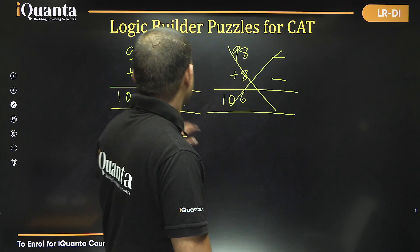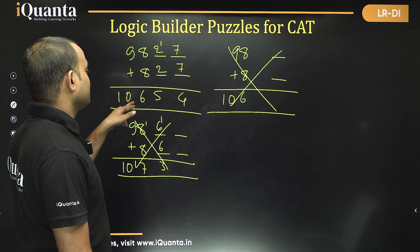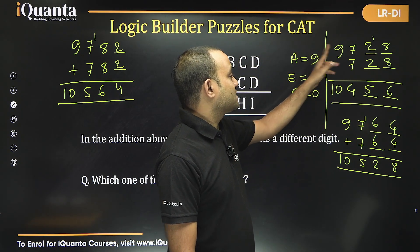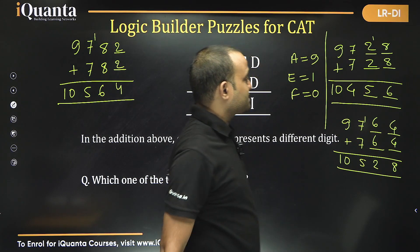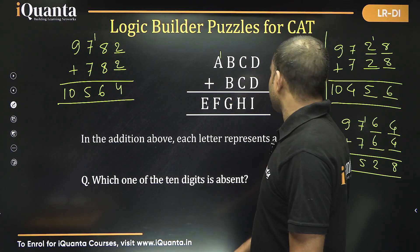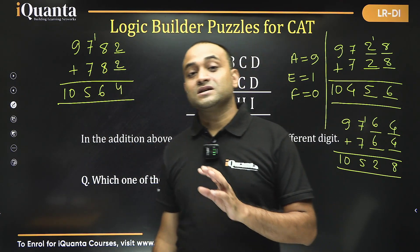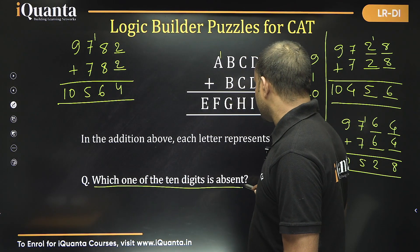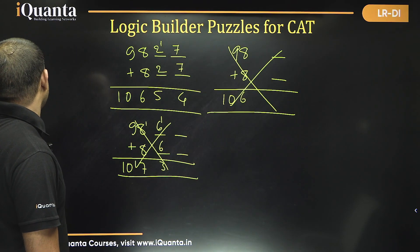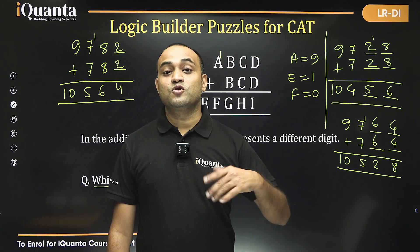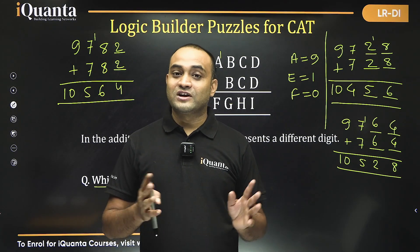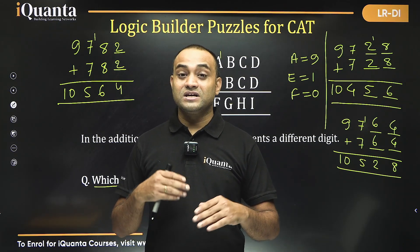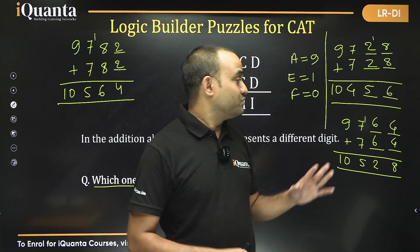The four valid combinations are: 9827+827=10654; 9764+764=10528; 9728+728=10456; 9782+782=10564. In all four cases, you can see that the digit 3 is absent. So 3 is the digit that is missing from the set of 10 digits — that is the answer.